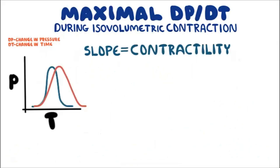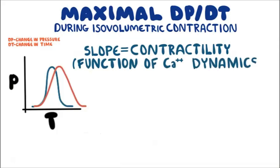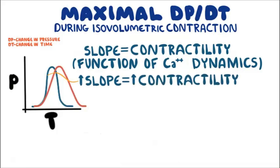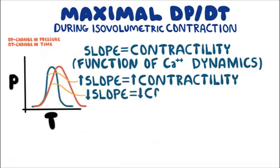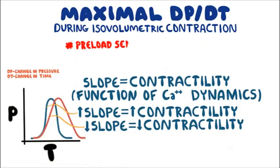The slope is a function of calcium dynamics during systole. Increased slope means contractility increases because of increased calcium dynamics. Decreasing slope means decreasing contractility because of decreased calcium dynamics. It is also important to note that dp/dt is not an ideal index of contractility because it is sensitive to preload — increased preload increases dp/dt, whereas decreasing preload decreases dp/dt.